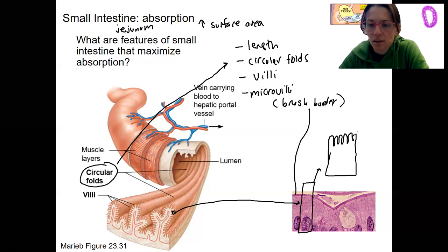Those increase surface area. Can you see that? Microvilli are located on one cell. Villi are made up of multiple cells. Beautiful. Pretty cool.